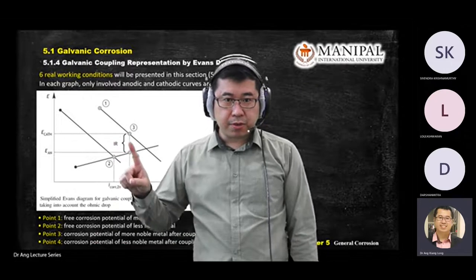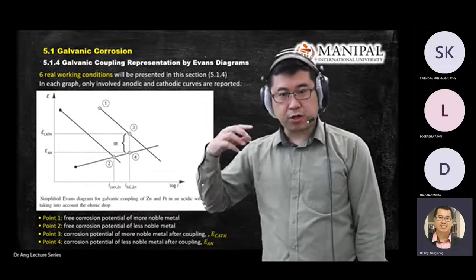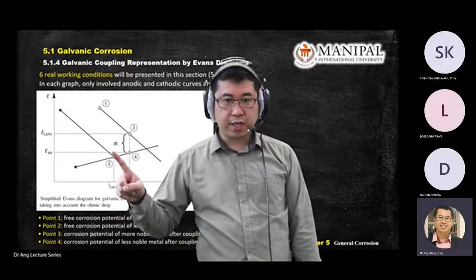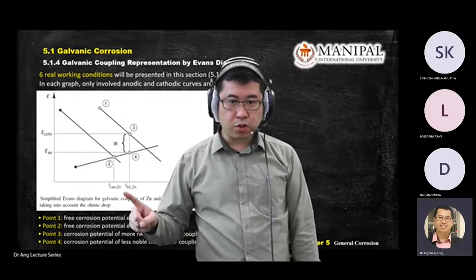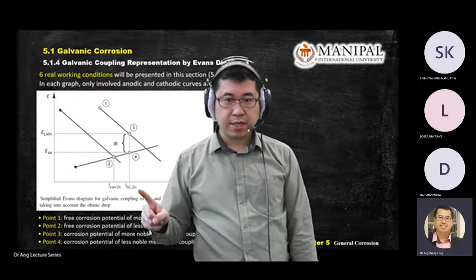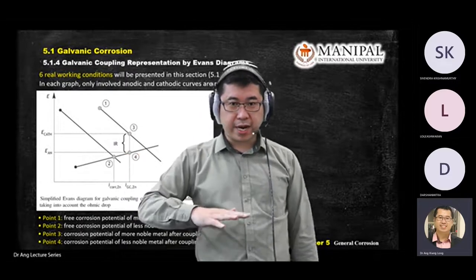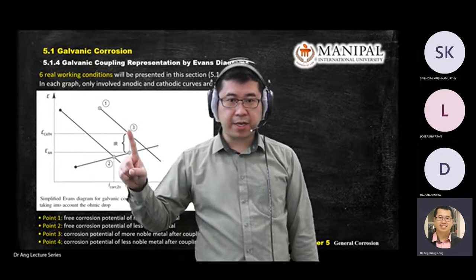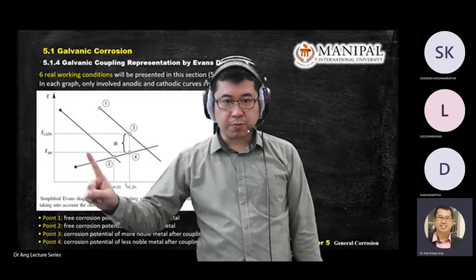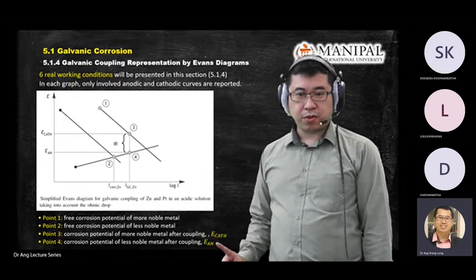Point four is chosen along the line between the two intersections. From point four, you project up to get the corrosion rate, since the less noble metal corrodes. Project left from the intersection point to get the potential for the cathodic process; project to get the potential for the anodic process. I hope you know how to label all these points — this is important for the final exam.